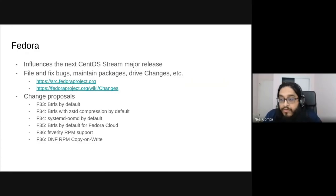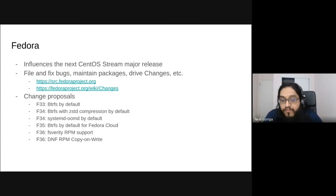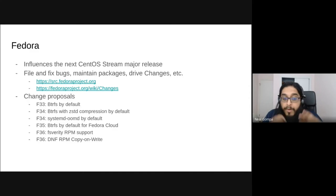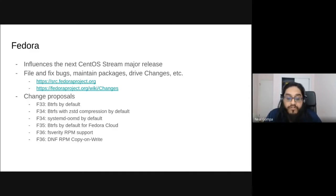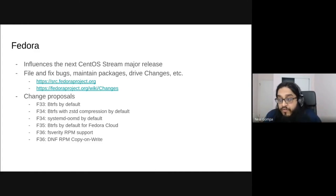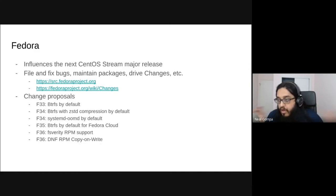Between Davide and I, we've done several Changes over the years. Notable ones include: Fedora Linux 33 — Btrfs by default; Fedora Linux 34 — ZStandard compression; Fedora Linux 34 — systemd-oomd; Fedora Linux 35 — Btrfs by default for Fedora Cloud. Rolling forward into Fedora Linux 36, we're looking at FS Verity enablement as well as Copy-on-Write for DNF/RPM to make RPM transactions super fast, leveraging features of the Btrfs filesystem.